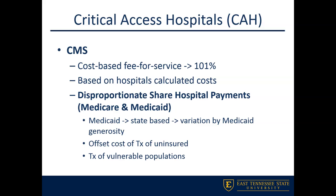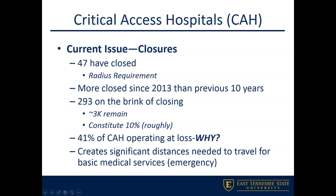CMS also administers something called disproportionate share payments, or DSH payments. These are used to help offset the treatment costs for more vulnerable populations. In rural areas, we see a lot of unique health conditions that can make treatment very costly, especially in a critical access hospital. CMS offers these DSH payments to help offset that cost. However, we have a huge issue around critical access hospitals in terms of their closure and the services they were providing just disappearing.